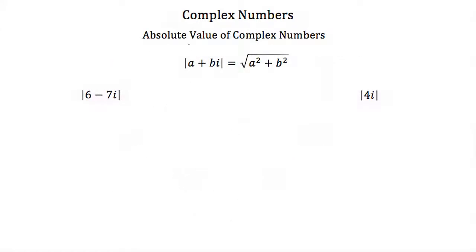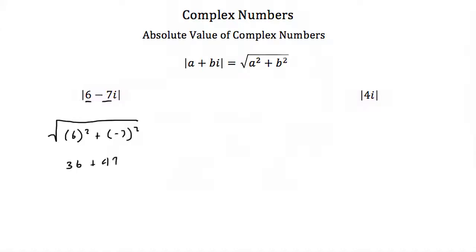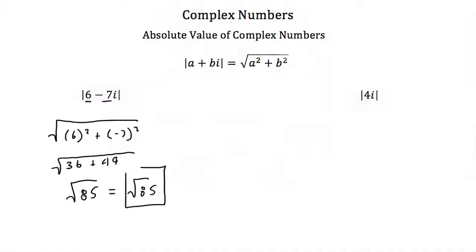Now the last thing we have to learn about is taking the absolute value of a complex number. If I had the absolute value of a plus bi, that's just equal to the square root of a squared plus b squared. So if I wanted to take the absolute value of 6 minus 7i, I would plug in 6 for a and negative 7 for b. So we'd have the square root of 6 squared plus negative 7 squared. 6 squared is 36 and negative 7 squared is 49. 36 plus 49 is 85, so we have the square root of 85. The square root of 85 doesn't reduce, so it's just the square root of 85 — and that's the absolute value of 6 minus 7i.